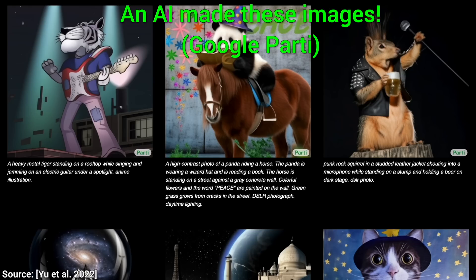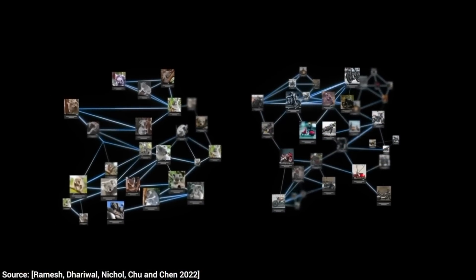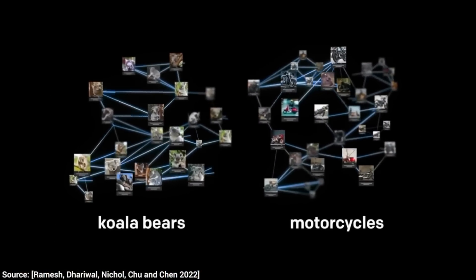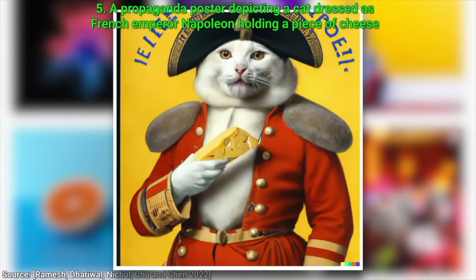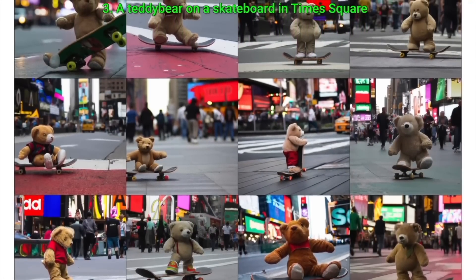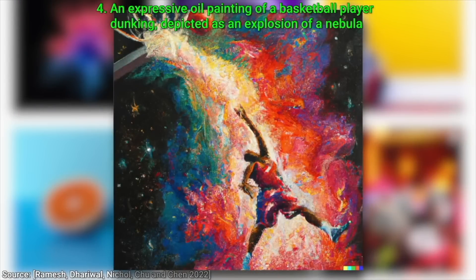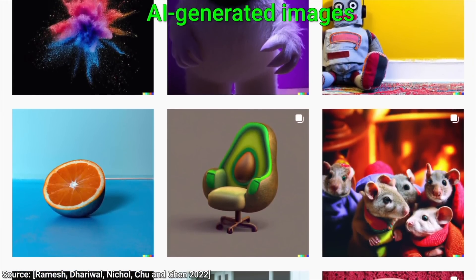This is not from OpenAI, but from Google. Just a few months ago, OpenAI's image generator AI called DALL-E 2 took the world by storm. With that, you could name almost anything — Cat Napoleon, a teddy bear on a skateboard on Times Square, a basketball player dunking as an explosion of a nebula — and it was able to create an appropriate image for it.